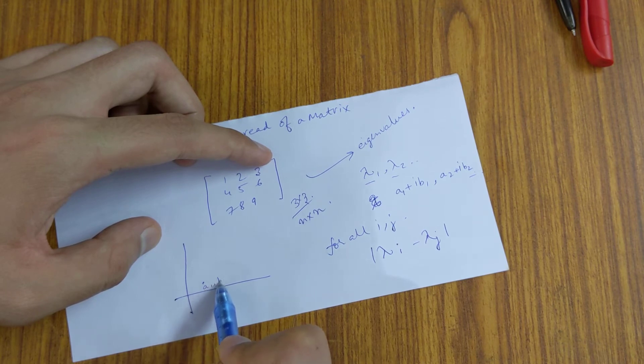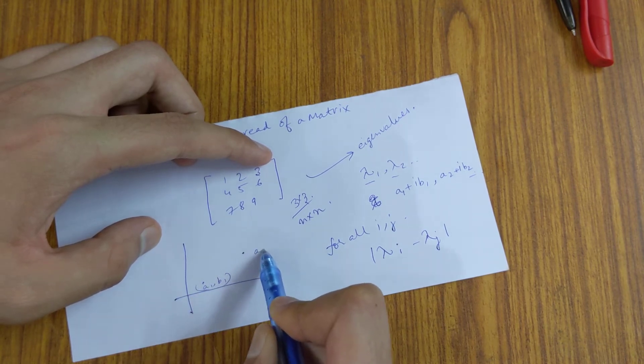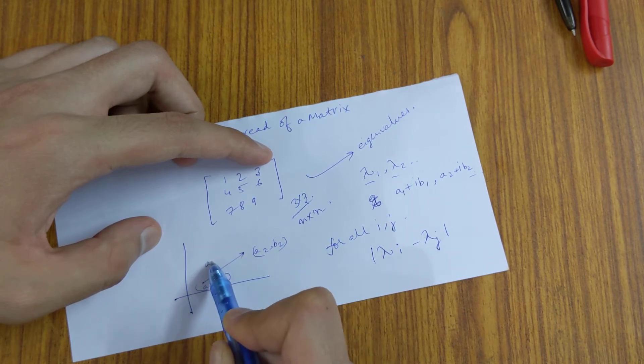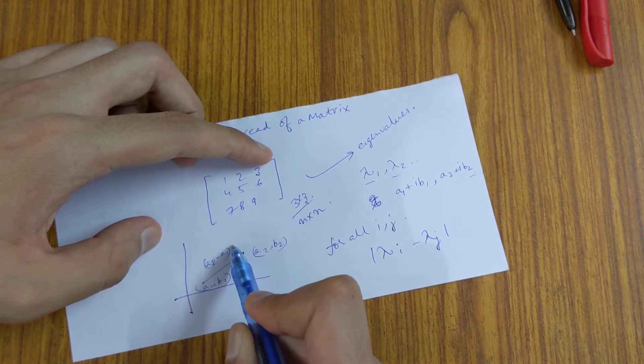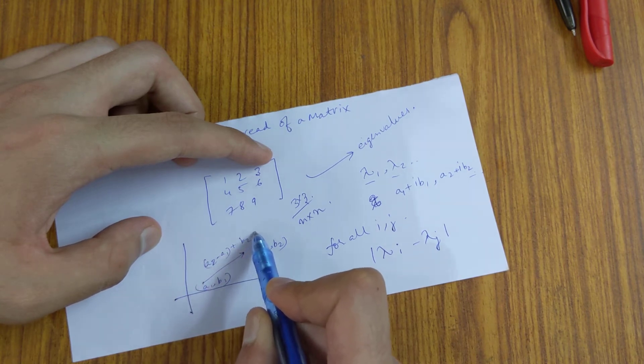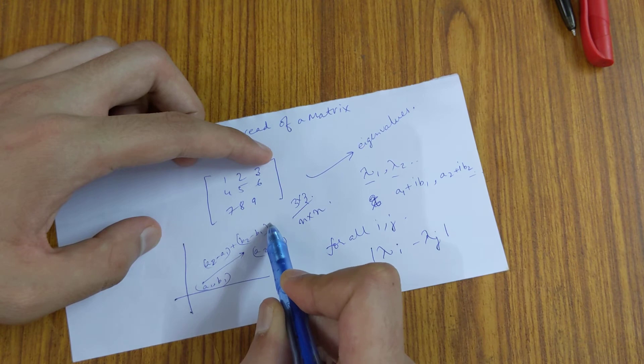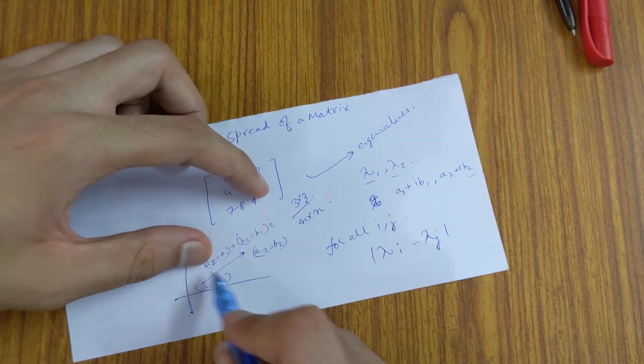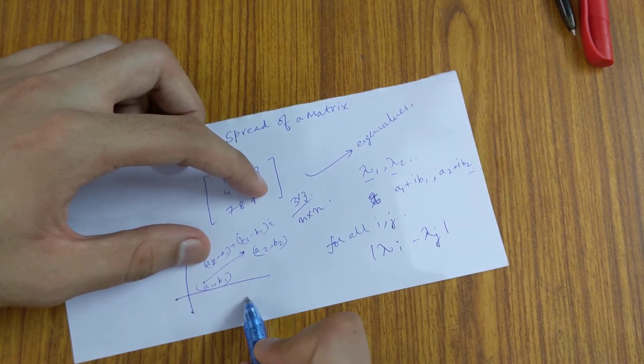This is, let's say, a1 comma b1, and this is a2 comma b2. And this distance vector will represent a2 minus a1 plus b2 minus b1 iota. So this magnitude of this distance, which is a scalar...